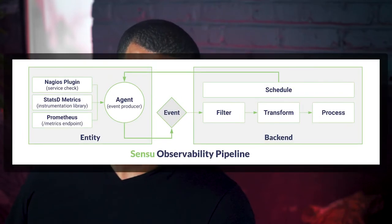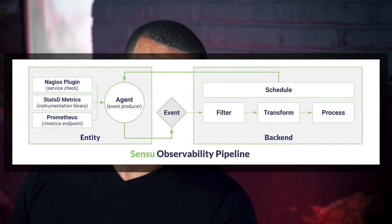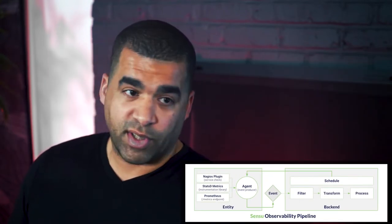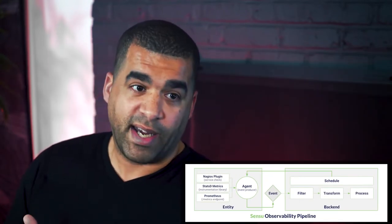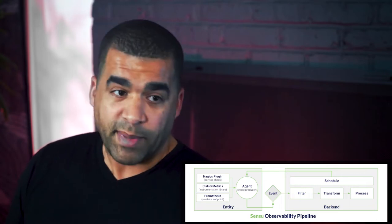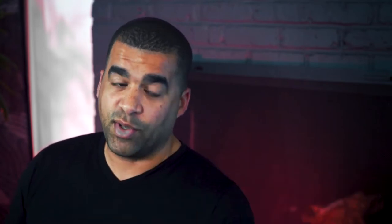Using a flexible API-oriented approach, Sensu pipelines chain many event processing components together in a model similar to Unix pipes. These components filter, modify, and route the data, producing alerts, storing metrics, and triggering automated remediations, and much more.